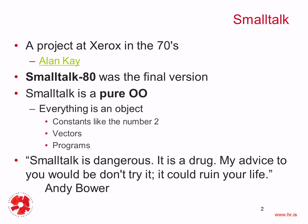If we compare Smalltalk to languages like C++ or Java, C++ is not a pure object-oriented language because the predefined types — integers and characters — are not objects. Indeed, you can actually program in C++ without using classes, programming as if you were writing C code. And in Java, even though you have to program using classes, the predefined types like integers and characters are not objects, so you cannot send messages to those types. Neither C++ nor Java are pure object-oriented languages.